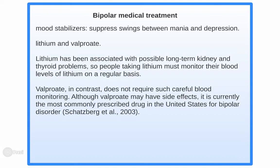For bipolar disorder, medical treatment uses mood stabilizers to suppress swings between mania and depression. Two compounds are lithium and valproate. Lithium has been associated with possible long-term kidney and thyroid problems, so people taking it must monitor their blood levels regularly. Valproate does not require such careful blood monitoring and is currently the most commonly prescribed drug in the U.S. for bipolar disorder. People with bipolar disorder generally enjoy their manic mood — feeling positive and believing they can do anything.